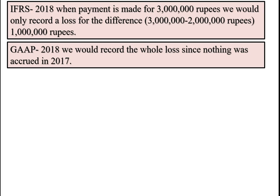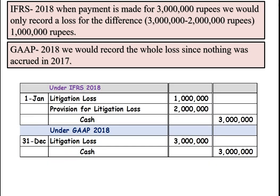In 2018 when the payment of three million rupees is made, under the international standard we have to record an additional one million rupees. But under GAAP, because we recorded nothing previously, we have to record the whole three million as litigation loss in 2018. Under the international standard, since we already set up a provision of two million, we only record a loss of one million in 2018. Under GAAP we record the whole three million, which means there is a two million dollar difference in what appears on the books.